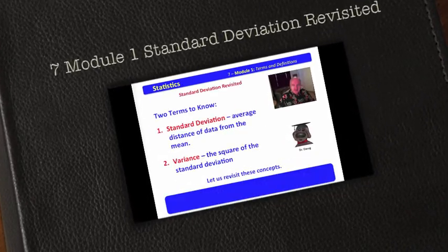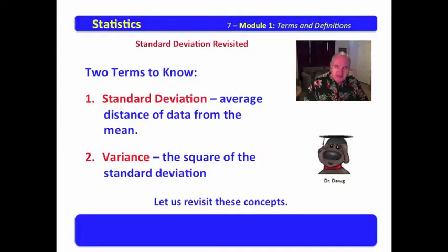Let us revisit standard deviation. In our last discussion, we laid out two terms to know. The first of those was standard deviation, which is the average distance of data from the mean. The second was the variance, and the variance is the square of the standard deviation.